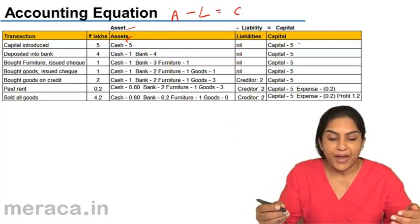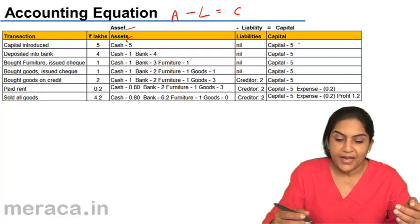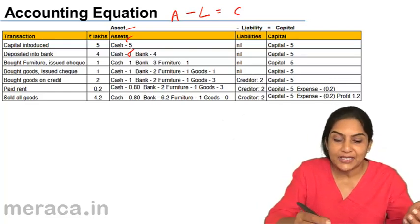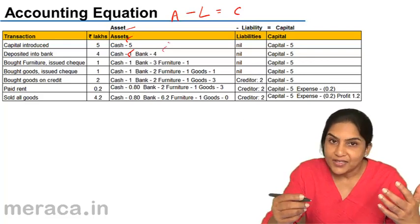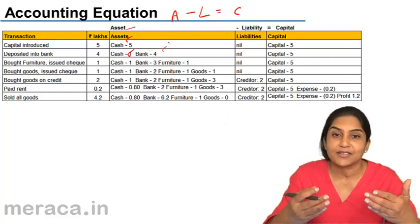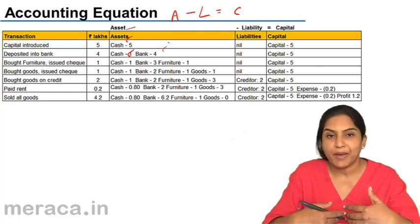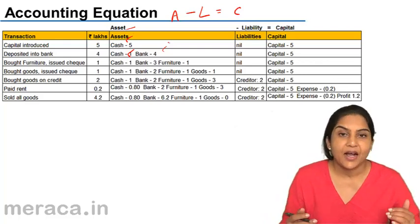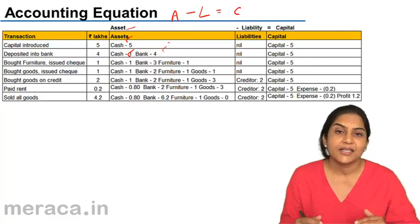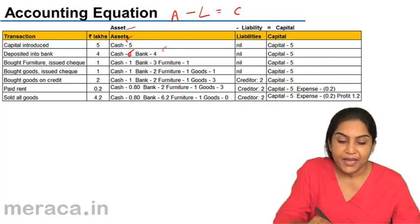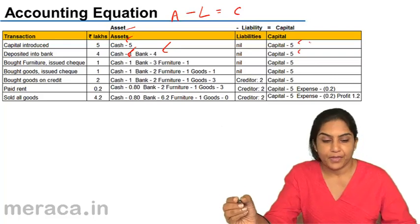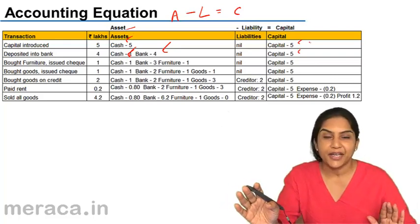Next, deposited into bank. When we deposit 4 lakhs into the bank, our cash comes down and it becomes only 1 lakh. But now we have money in the bank. We have given 4 lakhs money to the bank. That is an asset. Why is it an asset? Because the bank will pay me this money anytime I want. Tomorrow, if I have to close my business and collect this money, this money is receivable from the bank. Receivables are assets. Payables are liabilities. Our asset has now become cash is 1 and bank is 4. Capital, there is no change, continues at 5. Again, the equation is satisfied. Asset minus liability is equal to capital.